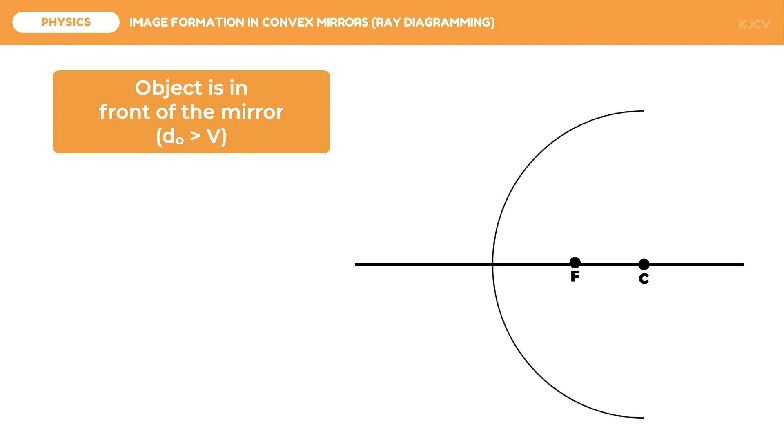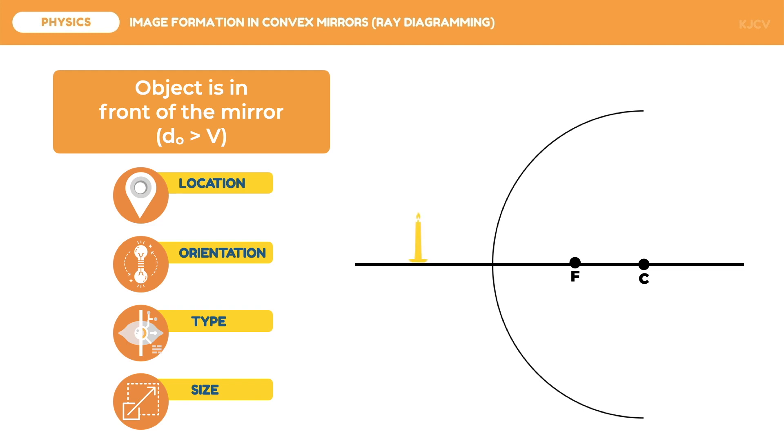With ray diagramming, we will be able to describe the image's location, orientation, type, and size. These qualitative characteristics can be abbreviated as LOTS. Since the object is in front of the mirror, we may put it anywhere at the left of the mirror. Now, let us draw the following rays.